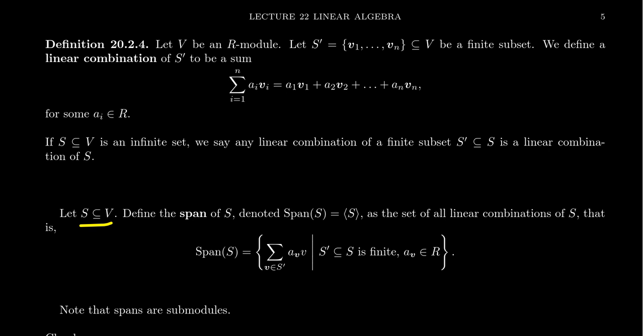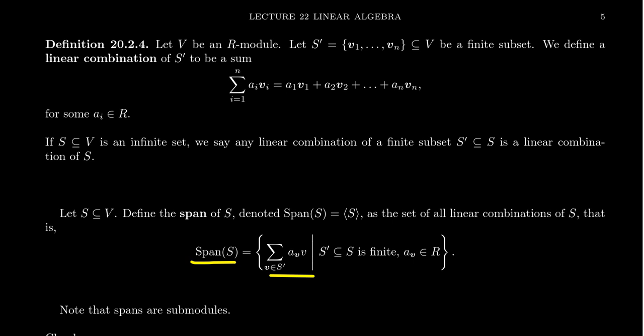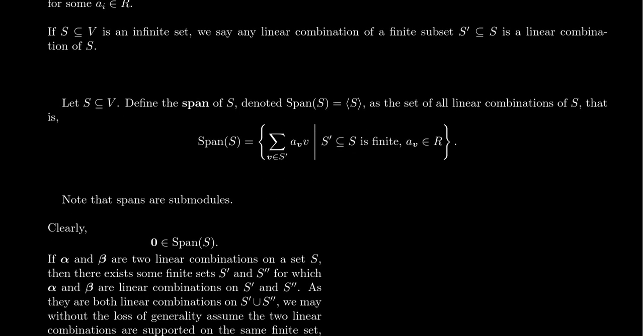For any subset S of an R-module — finite or infinite — we define the span of S, commonly denoted span(S) or with angle brackets to suggest it's the submodule generated by S, analogous to ideals and subgroups. The span is the set of all linear combinations of elements from S: sums of aᵥ times v, where v ranges over elements of some finite subset S' of S. We avoid infinite sums; all but finitely many coefficients are zero.